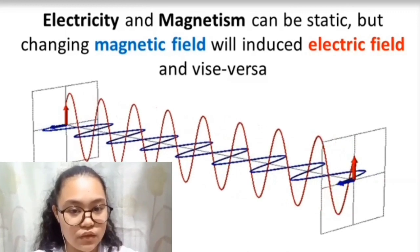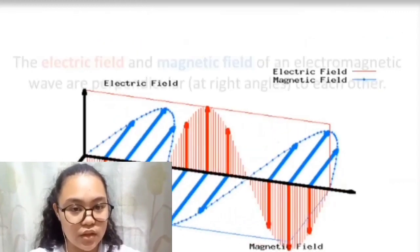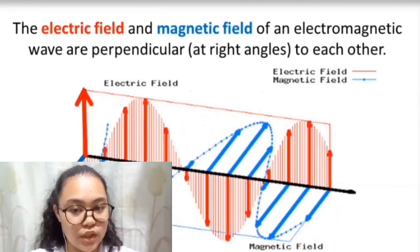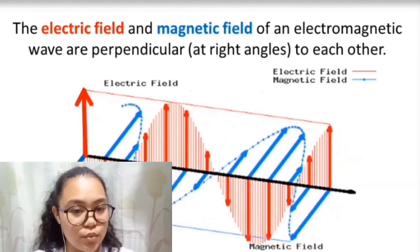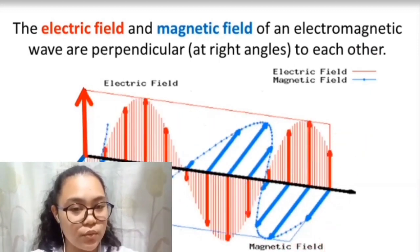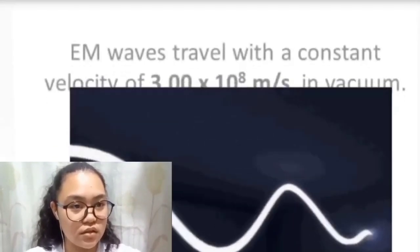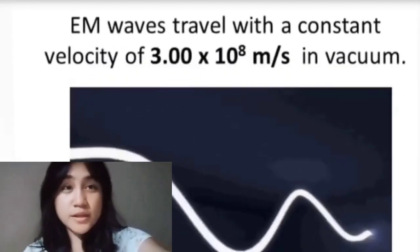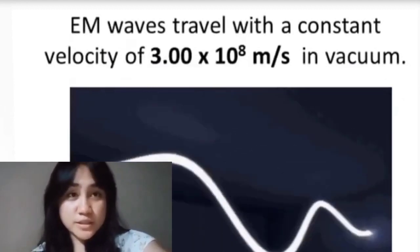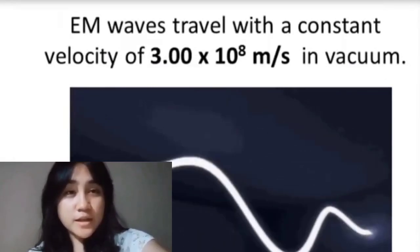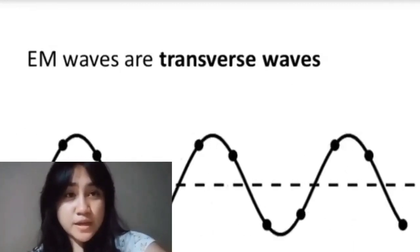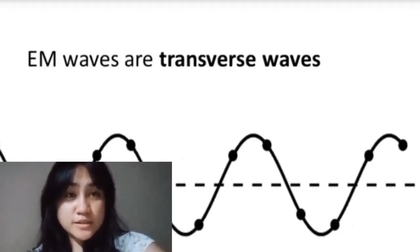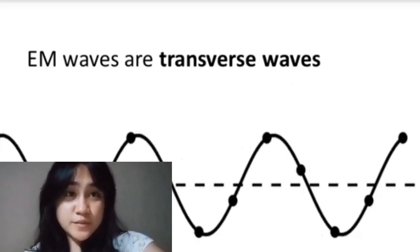Always keep in mind that the electric field and magnetic field of an electromagnetic wave are perpendicular, or at right angles, to each other, and also perpendicular to the direction of the EM wave's energy. Electromagnetic waves travel at a constant velocity of 300 million meters per second, or 3 times 10 to the 8 meters per second, in a vacuum. EM waves are also considered transverse waves.